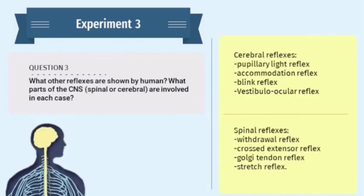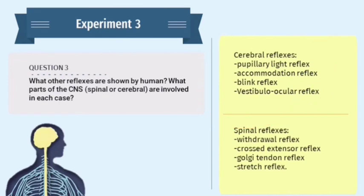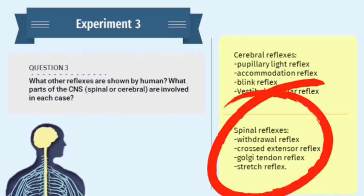For the last question — what other reflexes are shown by humans, and which parts of the CNS (spinal or cerebral) are involved in each case? After listing all the reflexes, they are divided into two types. For cerebral reflexes: pupillary light reflex, accommodation reflex, blink reflex, and vestibulo-ocular reflex. For spinal reflexes: withdrawal reflex, crossed-extensor reflex, Golgi tendon reflex, and stretch reflex.